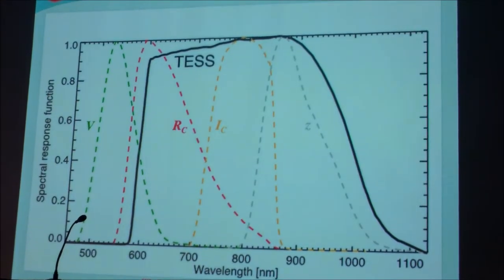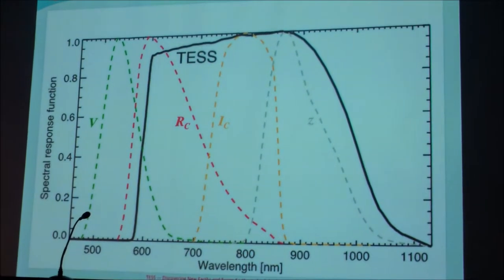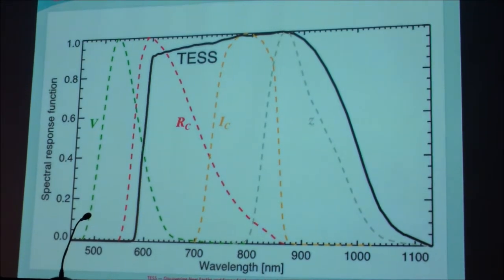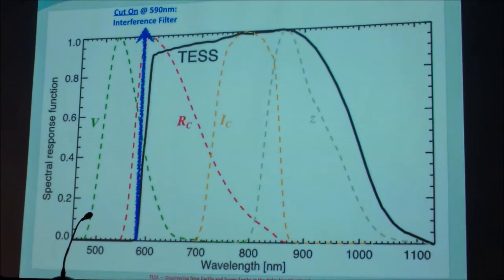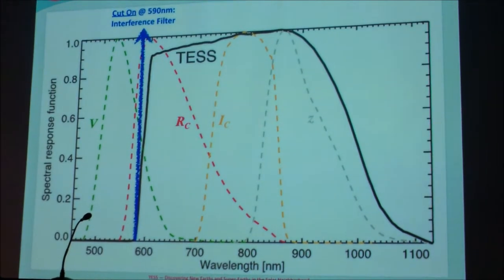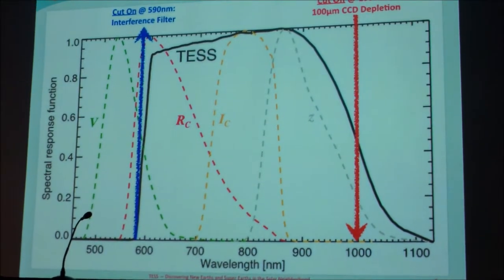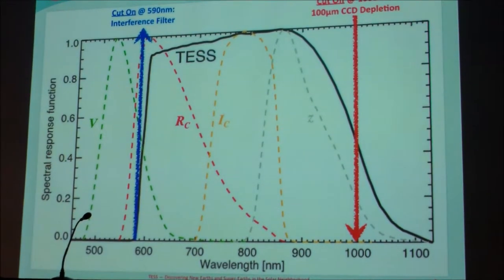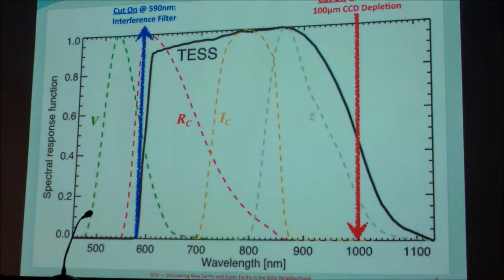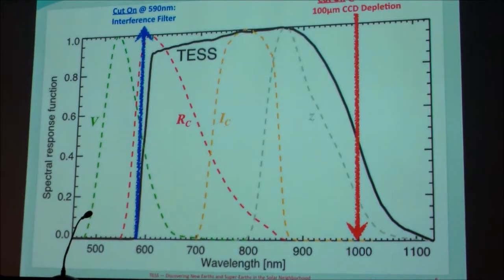The passband that TESS has been optimized to work in is shown here. This is wavelength along this axis and spectral response along the y-axis. And the cut-on at 590 nanometers is determined by an interference filter. And then we go all the way out to about a micron, which is dictated by the properties that the deep depletion CCDs have that will allow us to cover almost an octave in the passband.